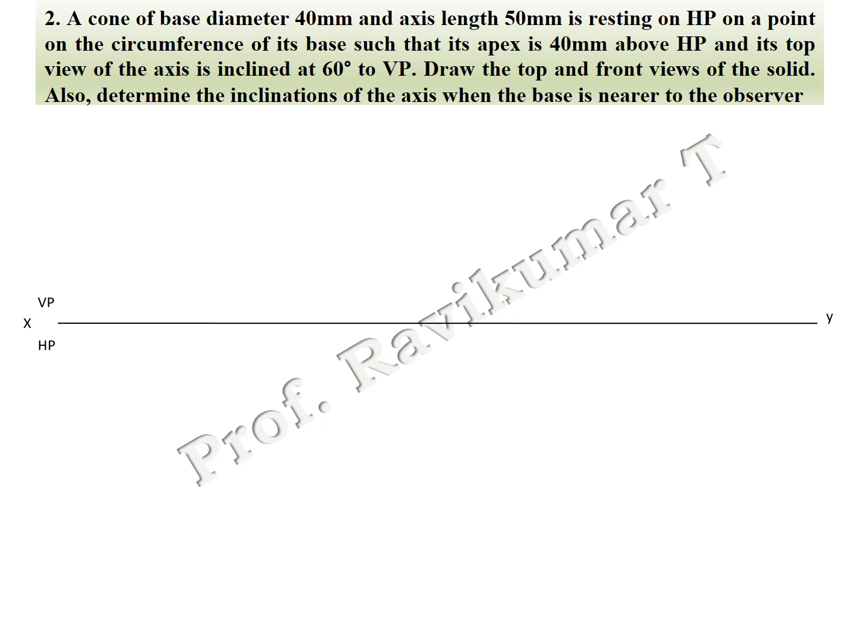The cone rests on HP on a point on the circumference of its base such that the apex is 40 mm above HP. The top view of the axis is inclined at a ratio to VP. Draw the front view of the solid and determine the inclination. Here they have not given inclination with HP but with VP, so we have to find the inclination with HP.